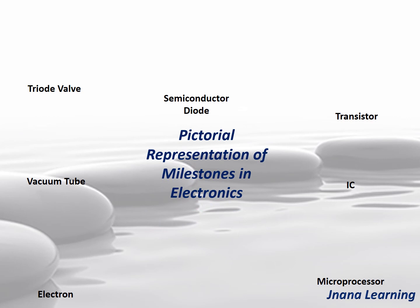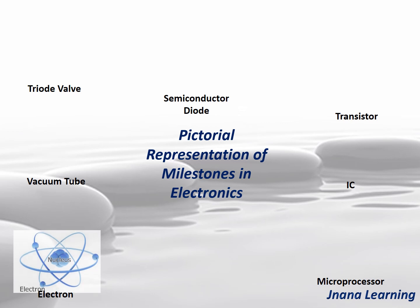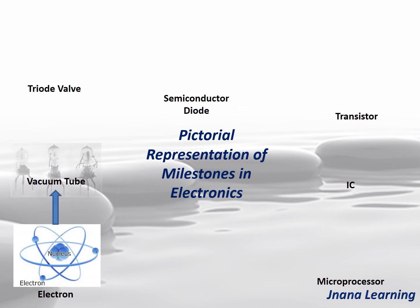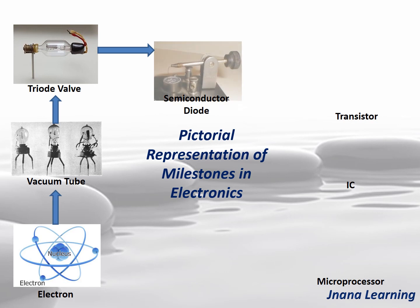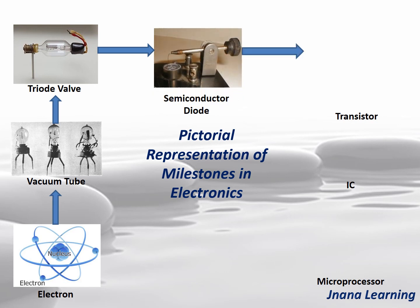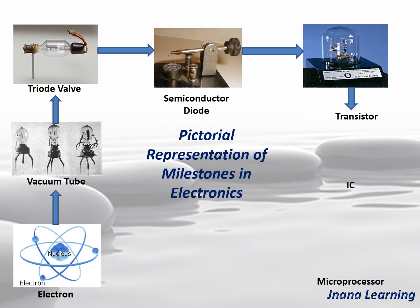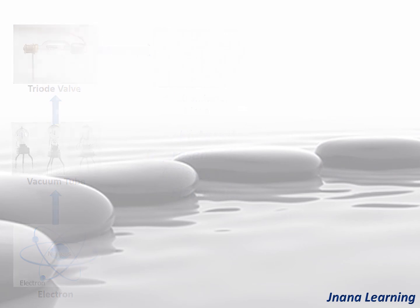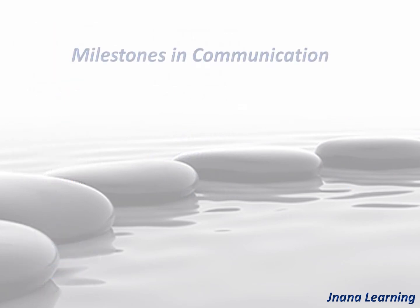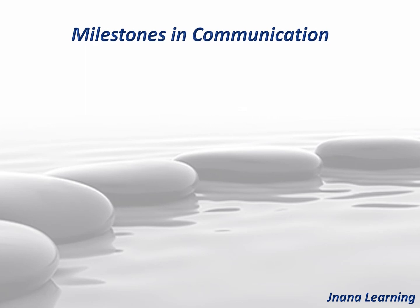As a summary, the pictorial representation of milestones in electronics begins with the electron, followed by the vacuum tube, triode valve, semiconductor diode, transistor, integrated circuit, and microprocessor. This is the journey of great achievements that we have today in the field of electronics. Next we move on to the important milestones in communication.